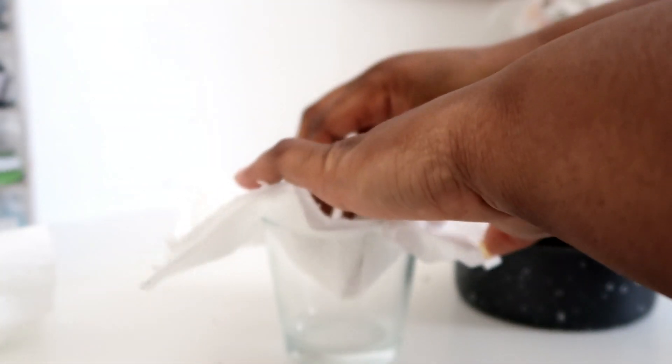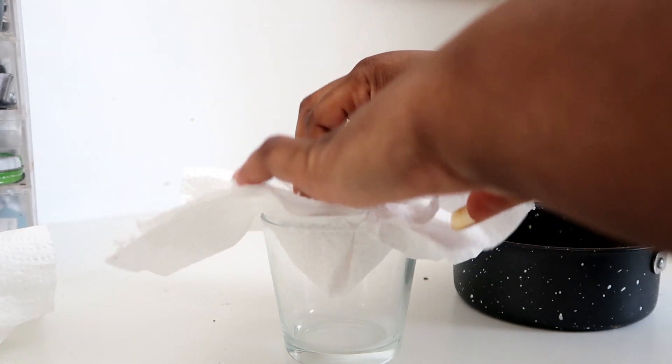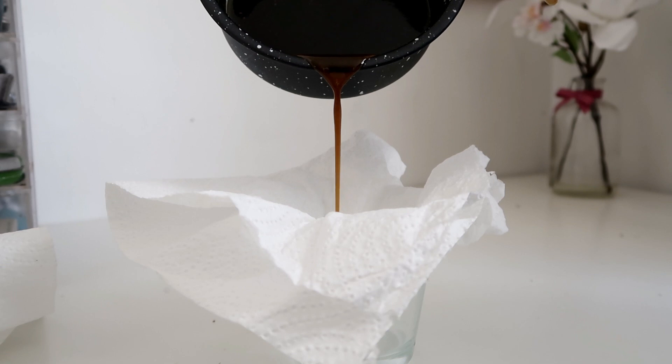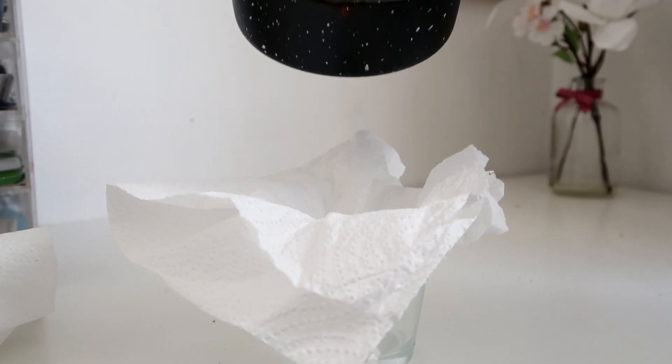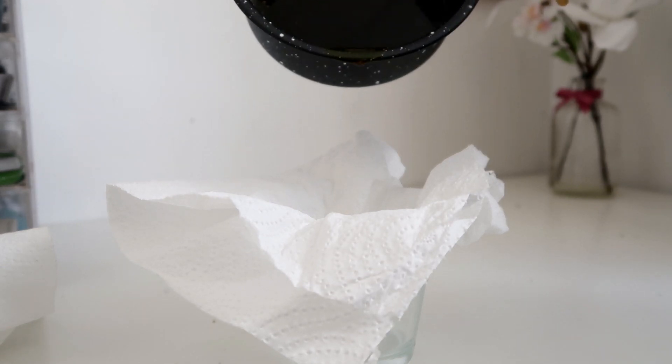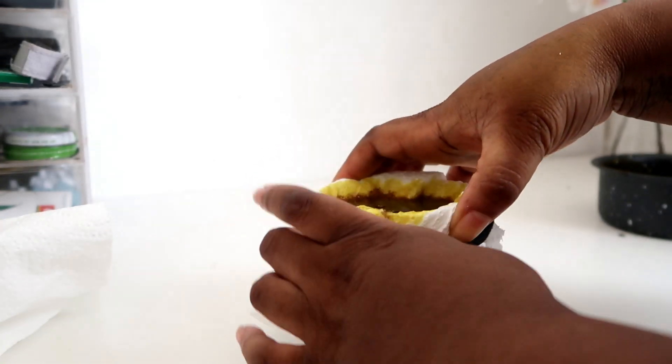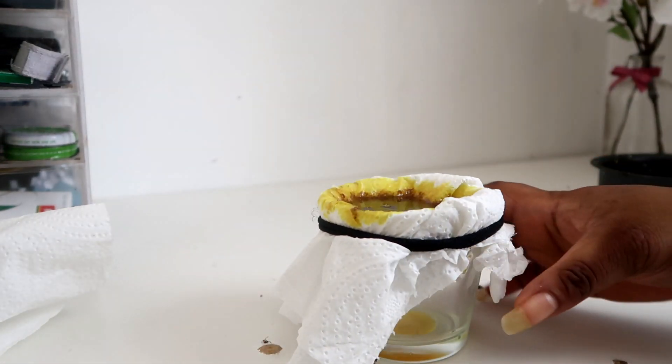Next I just poured our DIY oil onto the tissue paper and then I tied a hairband around the tissue paper to make sure it doesn't fall in. Altogether it took about 10 minutes for me to strain this and as you can see there's little droplets coming down.